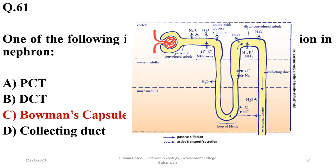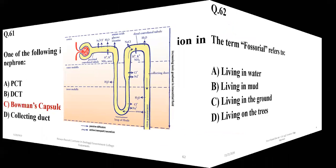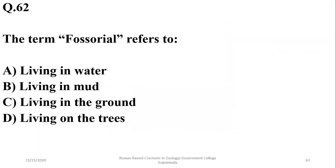Question number 62: The term fossorial refers to those animals which are living in the ground — animals which are burrowing animals. So C is the right option.